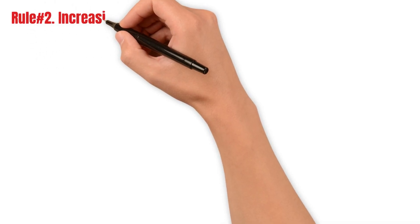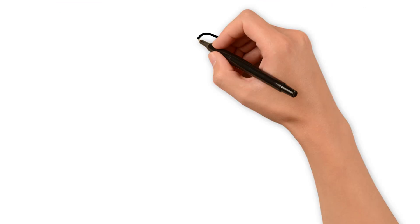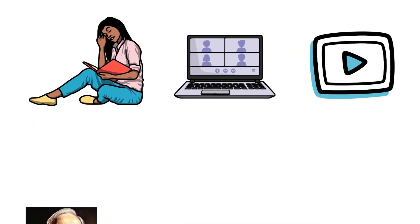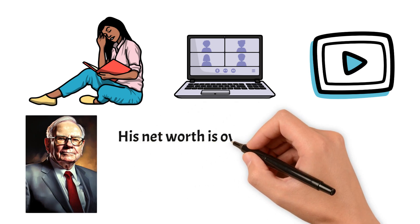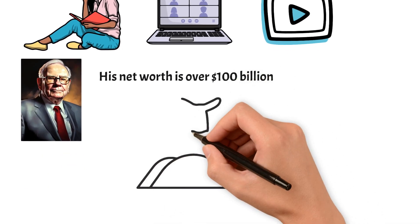Rule number two: Increasing time horizon is the best strategy to grow money. Most of us have come across books, blogs, and videos that term Warren Buffett as the most successful investor of all time. His net worth is over $100 billion, making him one of the top 10 richest persons.